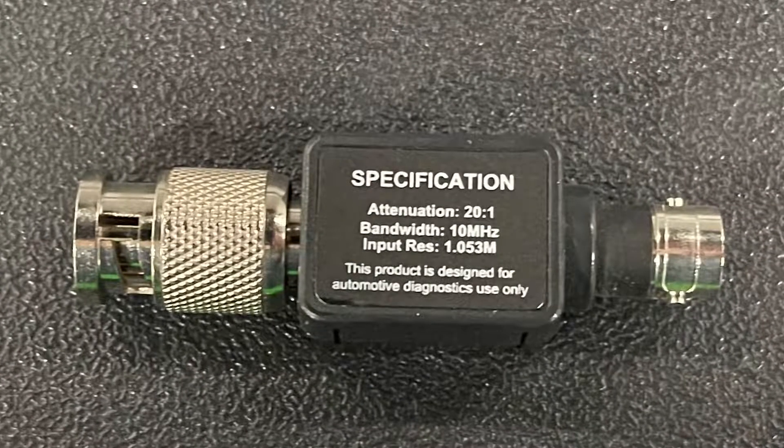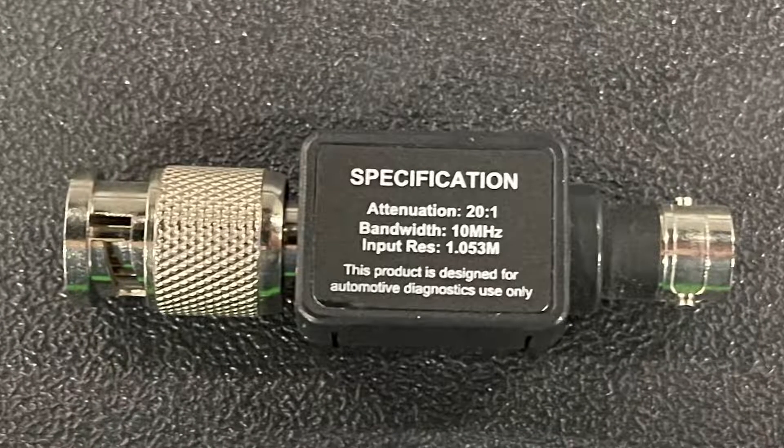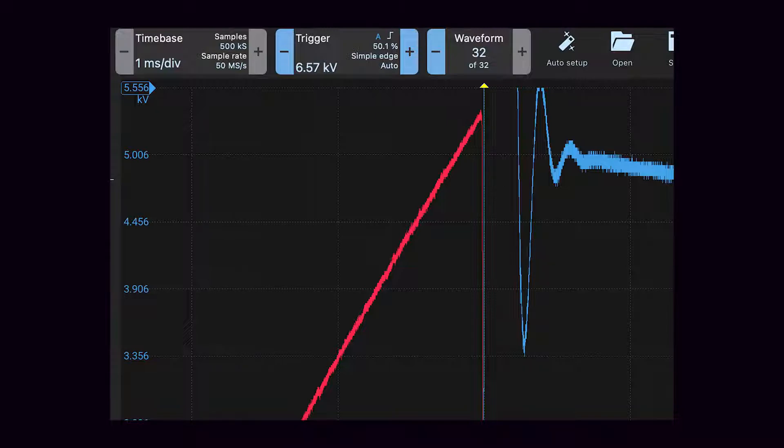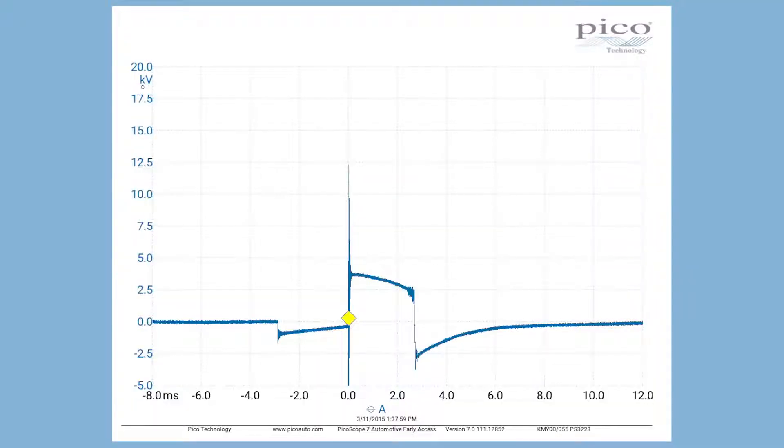Some scopes will convert the voltage scale to kilovolts when the ignition probe is selected. When you're trying to set up a scope to measure secondary ignition waveforms, the goal is to capture the ignition event from when power is applied to the coil to the point where the coil oscillates with the remaining energy. This can happen in 6 to 10 milliseconds.